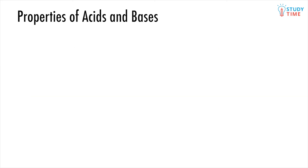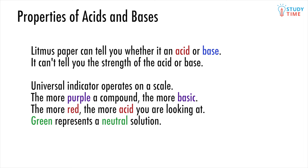Last of all, we should spend some time talking about indicators. In Level 2, you use both litmus paper and universal indicator. But which is better? While litmus paper can certainly help you tell whether you are dealing with an acid or base, it can't tell you how strong it is. This is where universal indicator steps in. Instead of giving a black and white — or in this case red and blue — definition, universal indicator operates on a scale. The more purple a compound, the more basic it is. And the more red, the more acidic you are looking at.